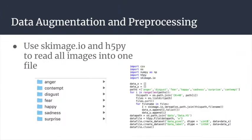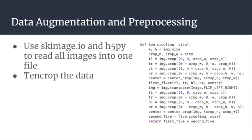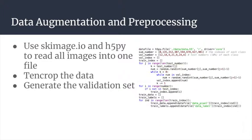Putting everything together, we first use skimage to put all images into one HDF5 file. Then we 10-crop the data. Finally, we generate the validation dataset. Then we'll talk about the training process.